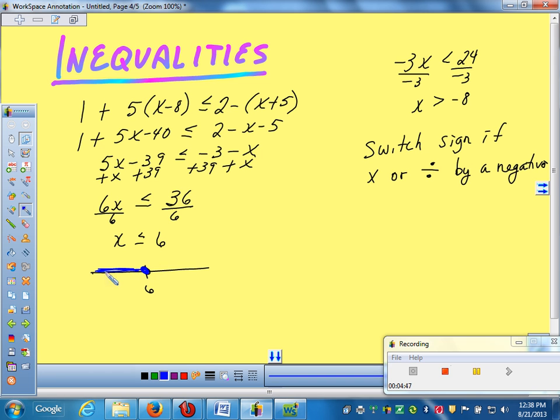So this is less than. If your variable is on the left side, the arrow is pointing you in the direction of the shade. But if I had written it as 6 is greater than or equal to x, you could just switch it around. But if x is on the left side, it's pointing in the direction of the shade. All the time? Yes. Well, that's a little shortcut.